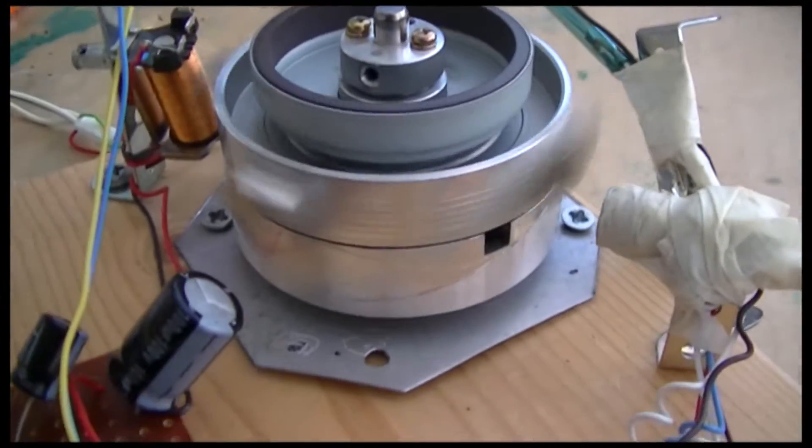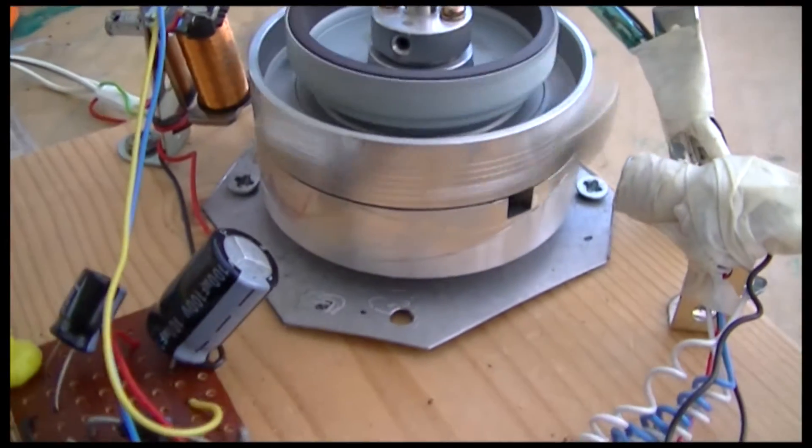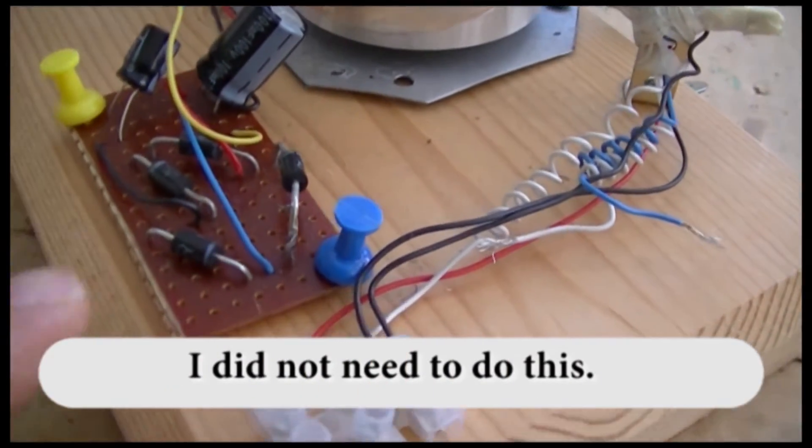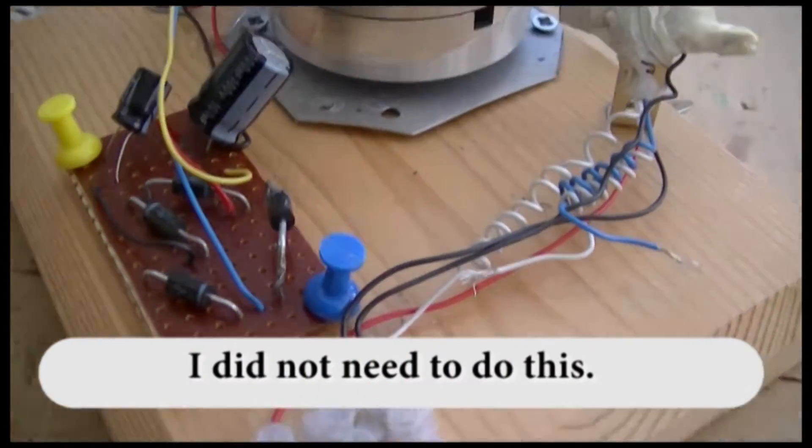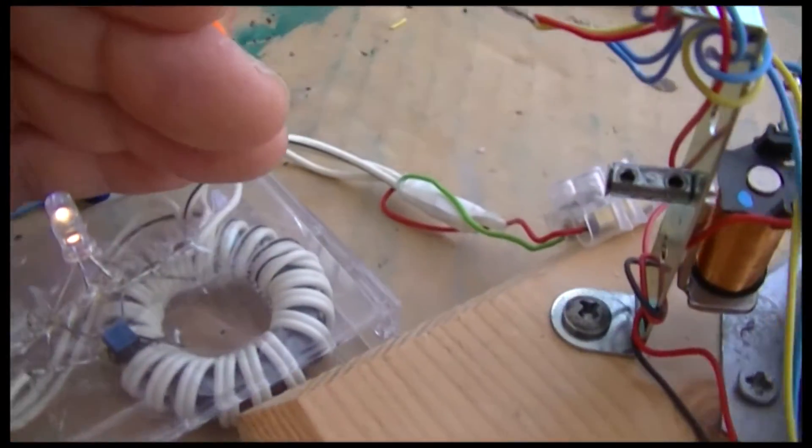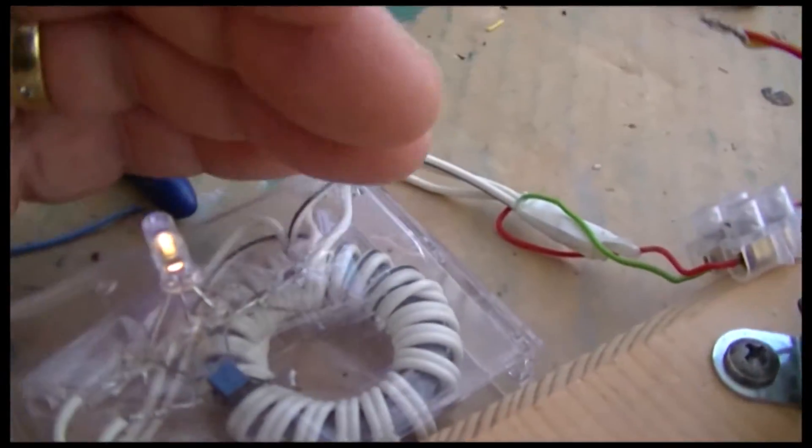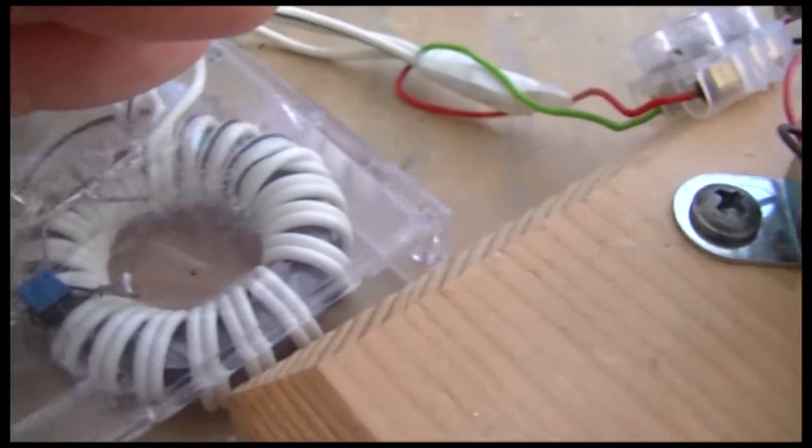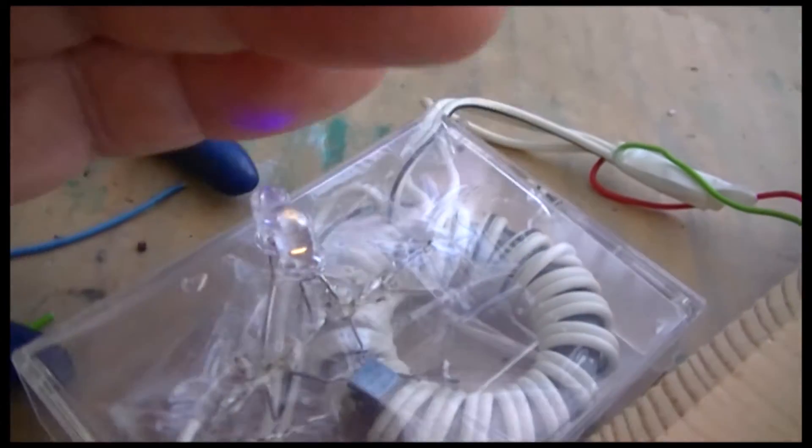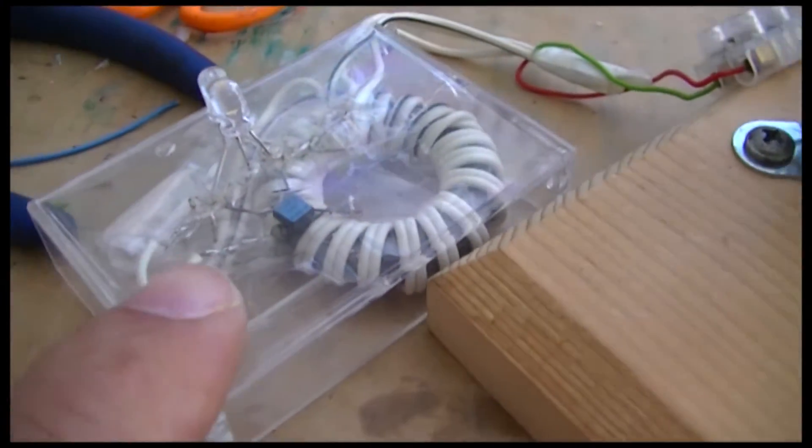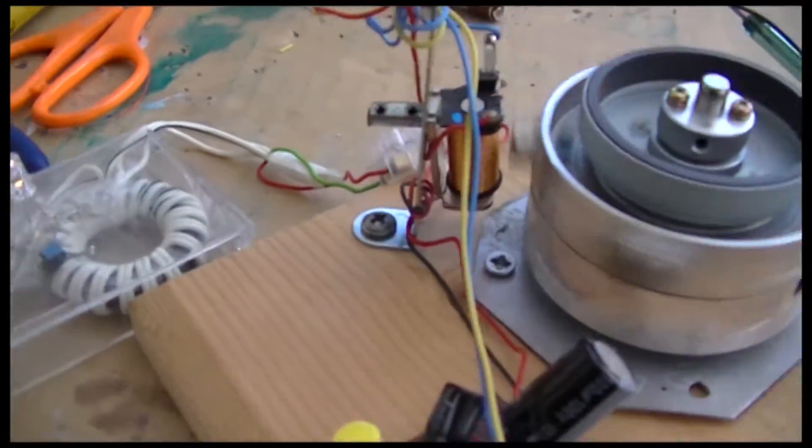I put this coil on there through this bridge rectifier. I have it working with the LEDs. You can see the other two LEDs, blue and yellow. Jewel thief circuit. There you go.